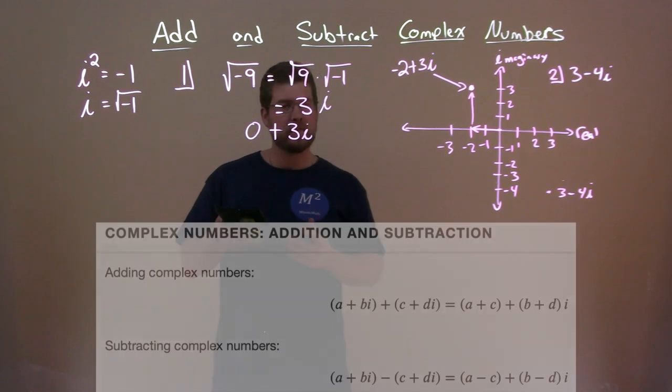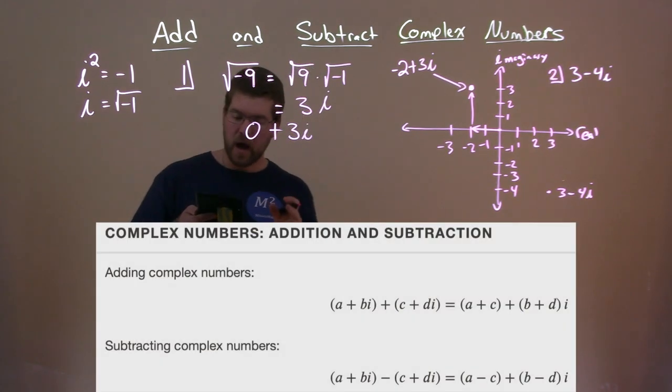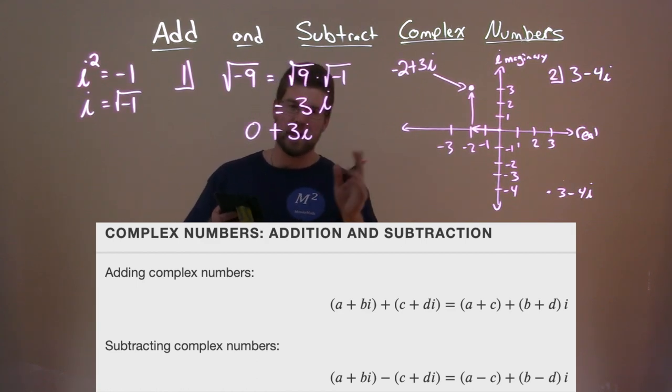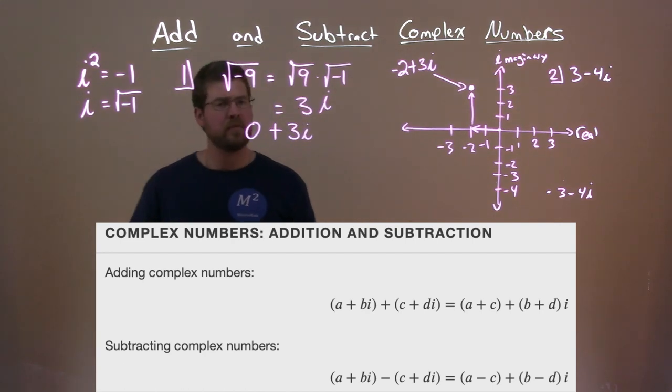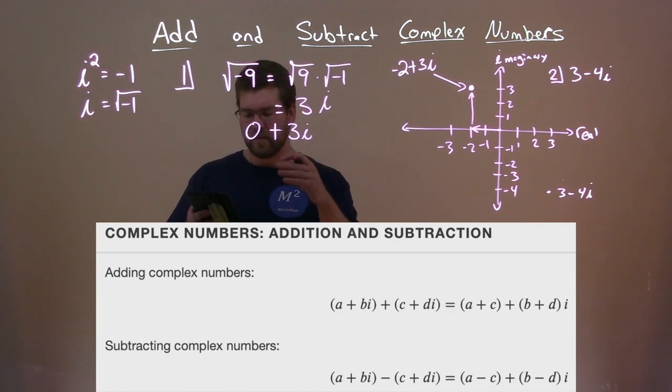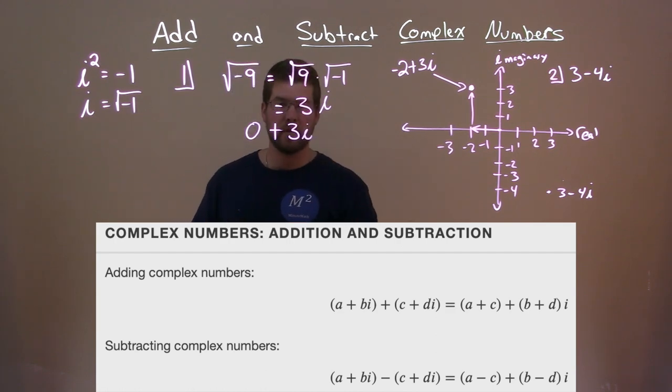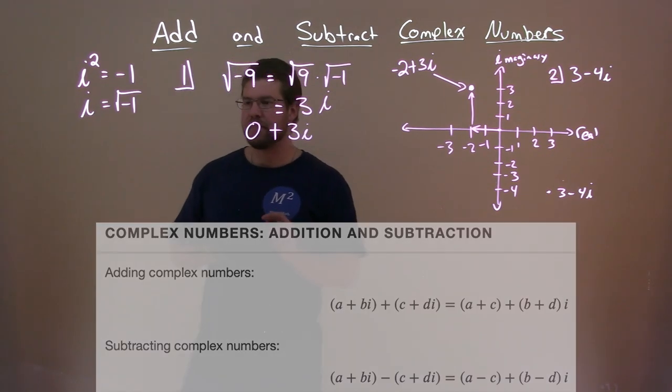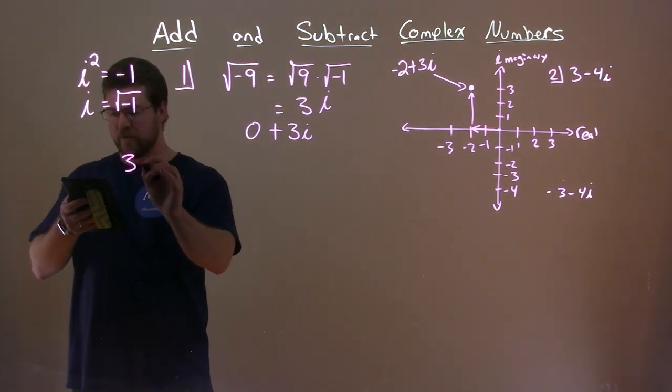When we add complex numbers, we know that (a + bi) + (c + di) is equal to (a + c) + (b + d)i. And subtracting is very similar: (a + bi) - (c + di) is equal to (a - c) + (b - d)i. All right, so let's go through two examples here, one for adding and one for subtracting.